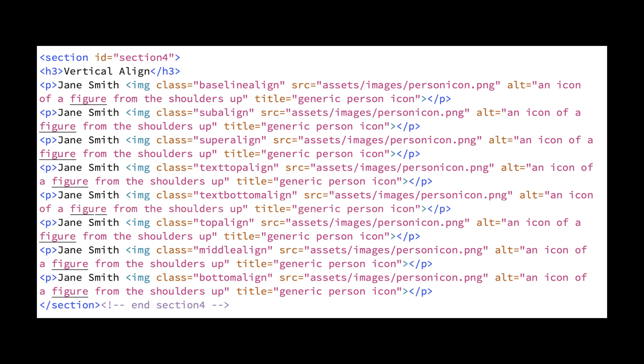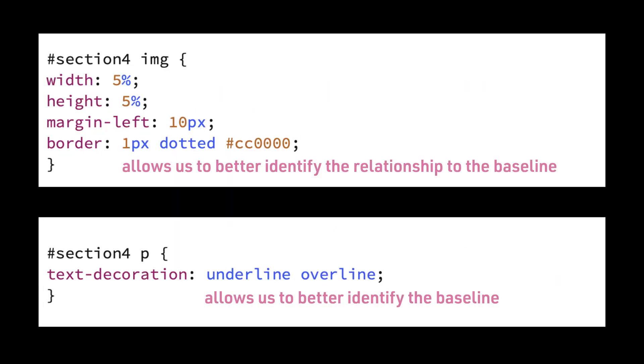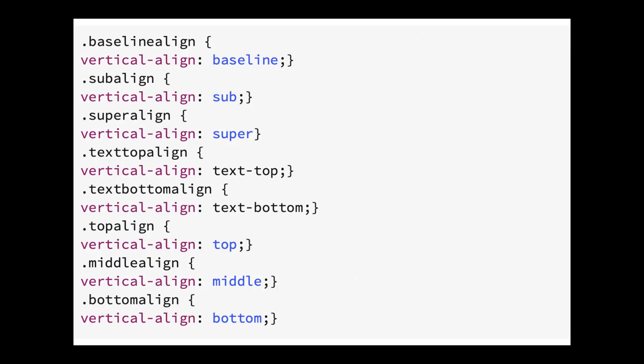This is the HTML for an example showing how the vertical-align property affects the positioning of an icon against a line of text. Here is the CSS. First we look at the CSS that applies to all the icons, and then we will look at the CSS of different vertical-align values. Now we will look at how this will display. In the first set of examples, we will look at baseline, sub, and super.